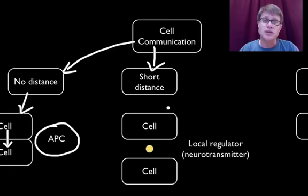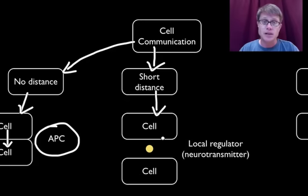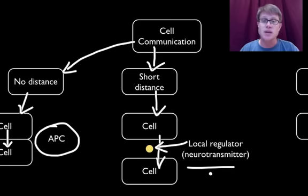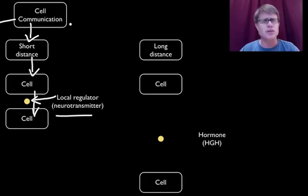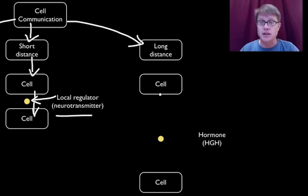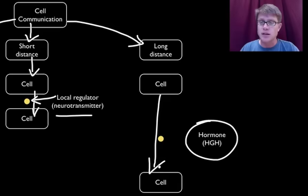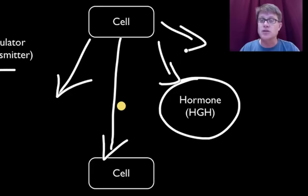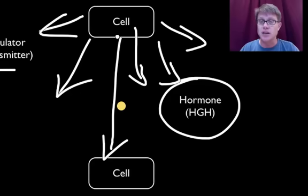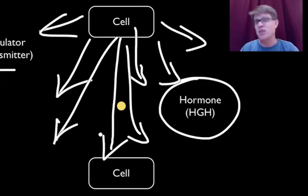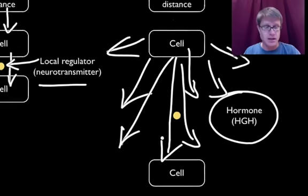Next are local regulators. If the distance is short and you want to make sure a message goes from one cell to another, you can use a local regulator. An example is when a neuron is connected to another neuron through a synapse — you can send a neurotransmitter to carry the message across. If the distance is long or the audience is large, you'd use something like a hormone. The one I'll talk about is human growth hormone, which can be sent not to just one cell but to multiple cells, and they can figure out based on that message whether they want to act on it.